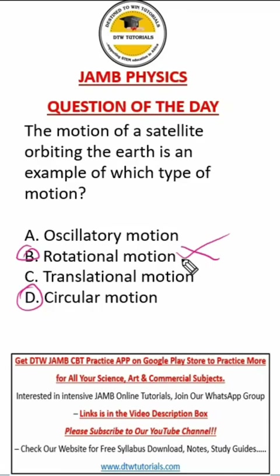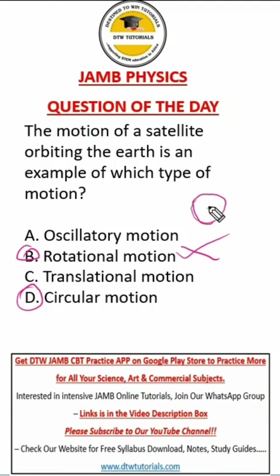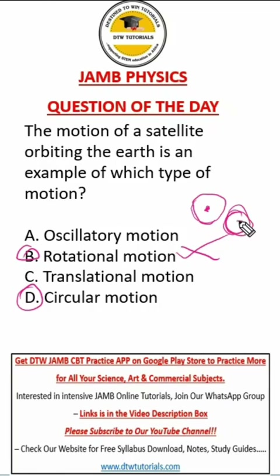Let me quickly tell you the difference between rotational and circular motion. Rotational motion is when a body rotates on an axis that is inside the body. An example of rotational motion is the wheels of a moving car — the tire rotates and the axis is inside the body. Another example is the rotating blades of an electric fan. You can see that the body rotates and the axis is inside the body.